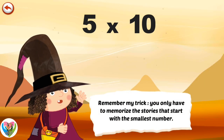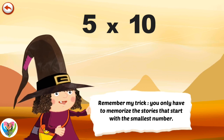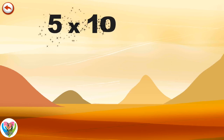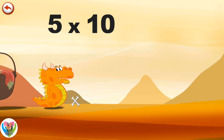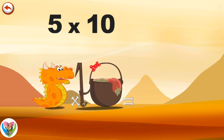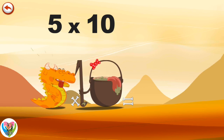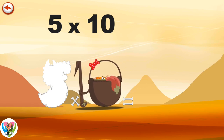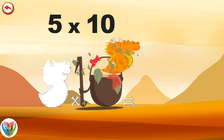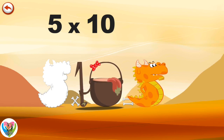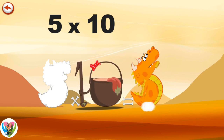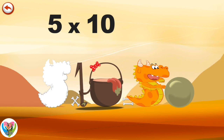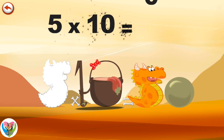Remember my trick. You only have to memorise the stories that start with the smallest number. What's the story of 5 times 10? When Flaming 5 meets the potion Magi 10, it makes him very, very hungry. He dives headfirst into the cauldron and comes out feeling very full. He gives an enormous magic burp and blows a bubble in the shape of a zero. 5 times 10 is 50.